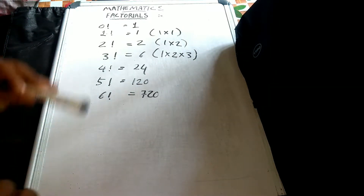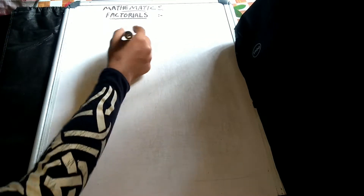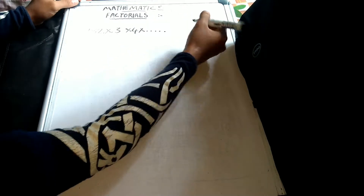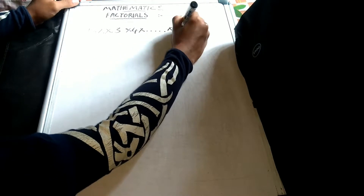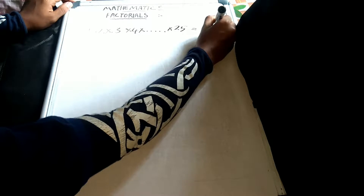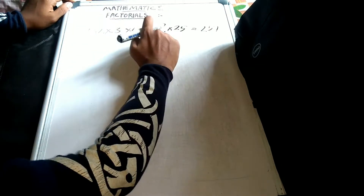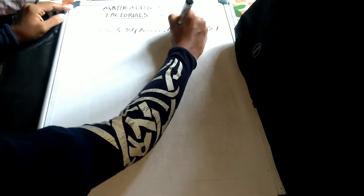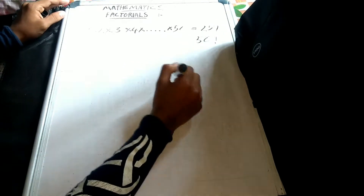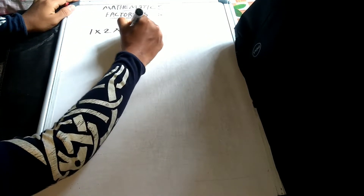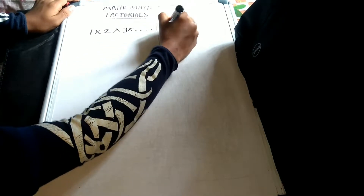OK, next we will go. So we will write: 1 into 2 into 3 into 4 — and so on, we will write it as 25. Next: 1 into 2 into 3 into... etc.